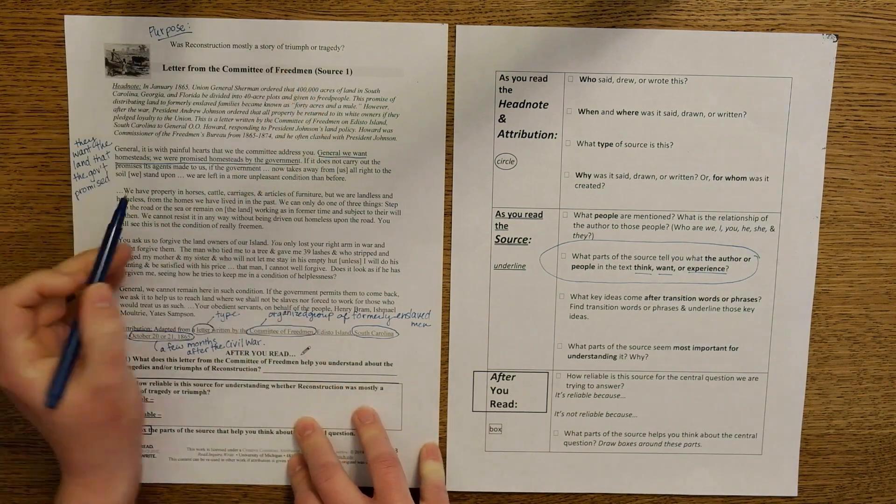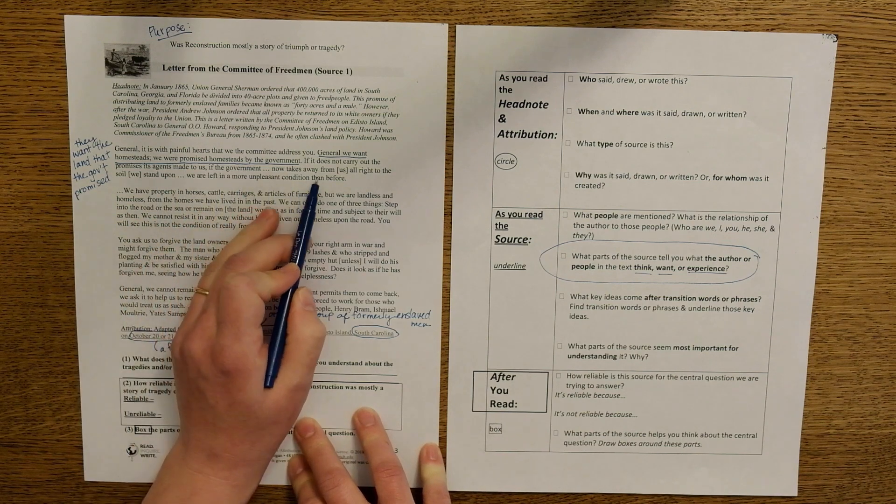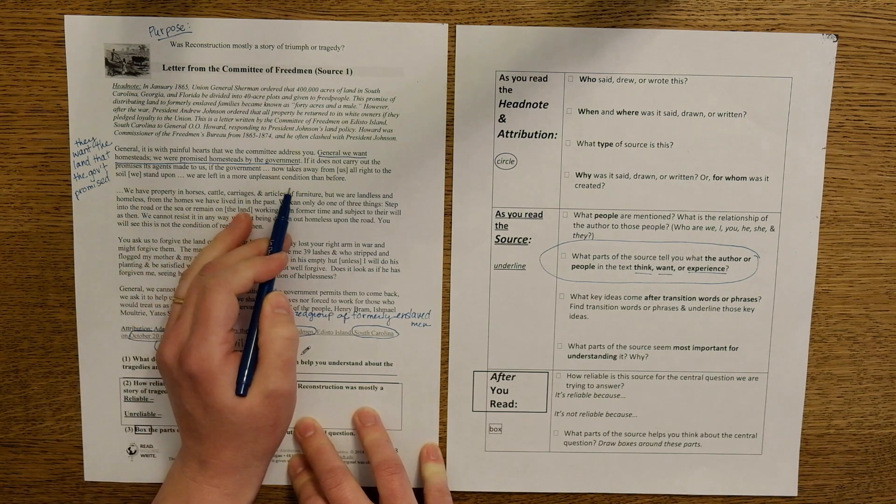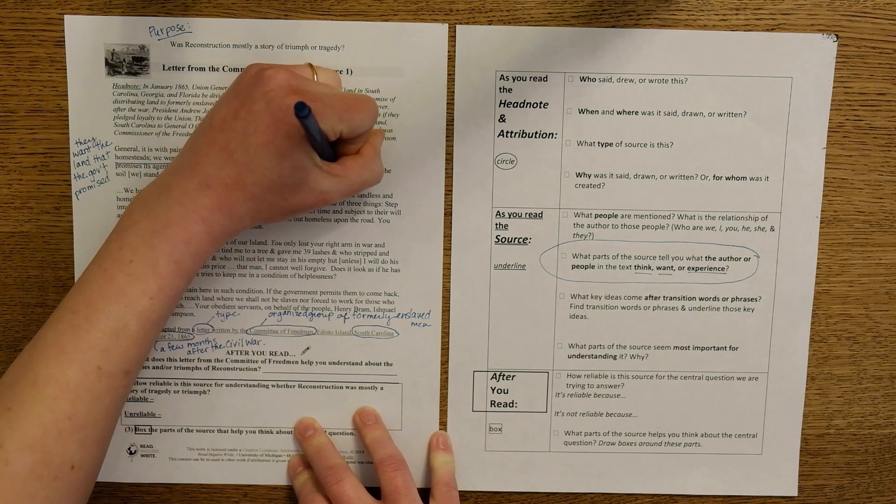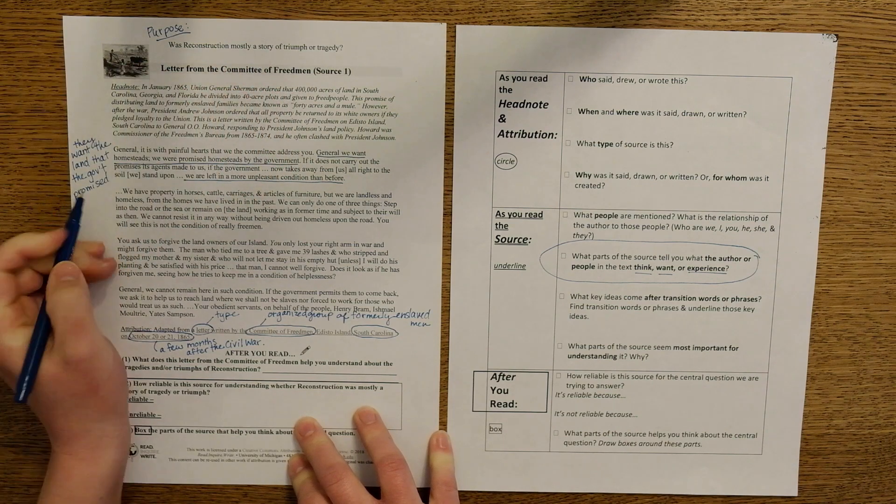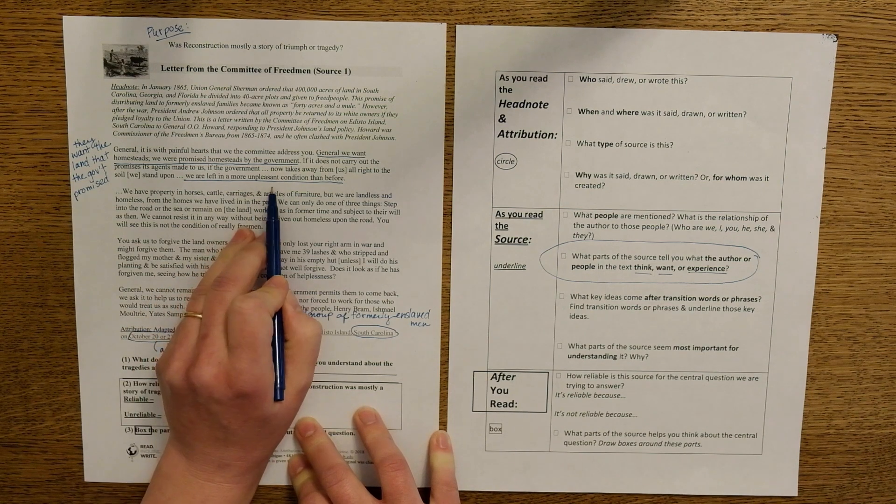If it does not carry out the promises its agents made to us, if the government now takes away from us all right to the soil we stand upon, we are left in a more unpleasant condition than before. I'm going to underline that too because it's part of what they're experiencing. If you, the government, do not give us the land that you promised, you're going to leave us in a worse state than you left us before the Civil War.